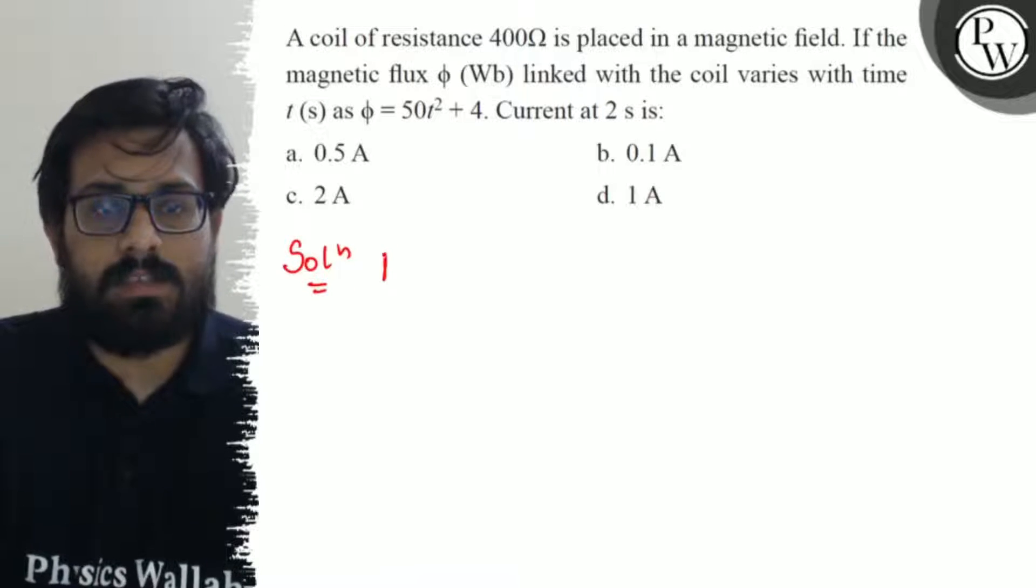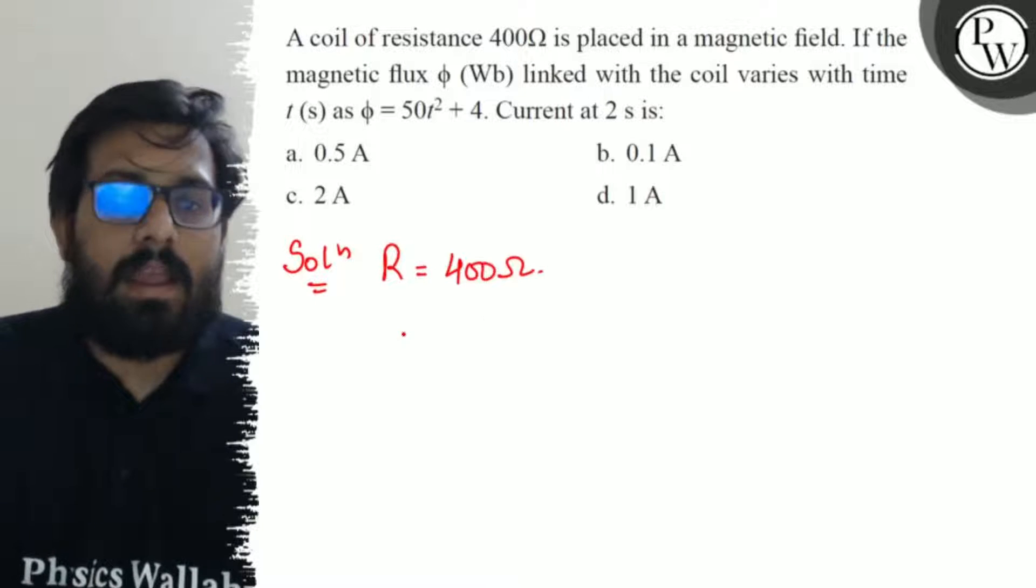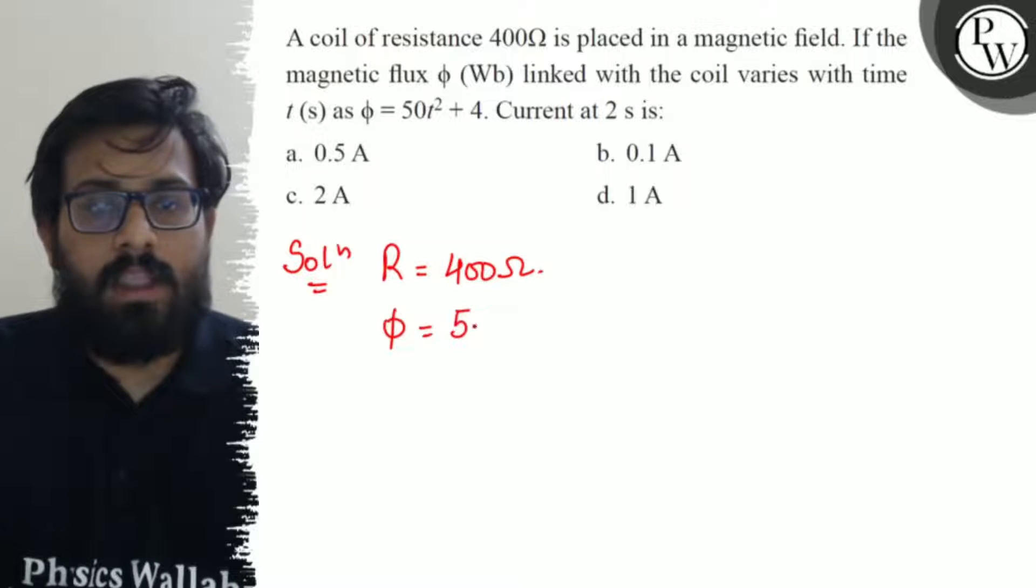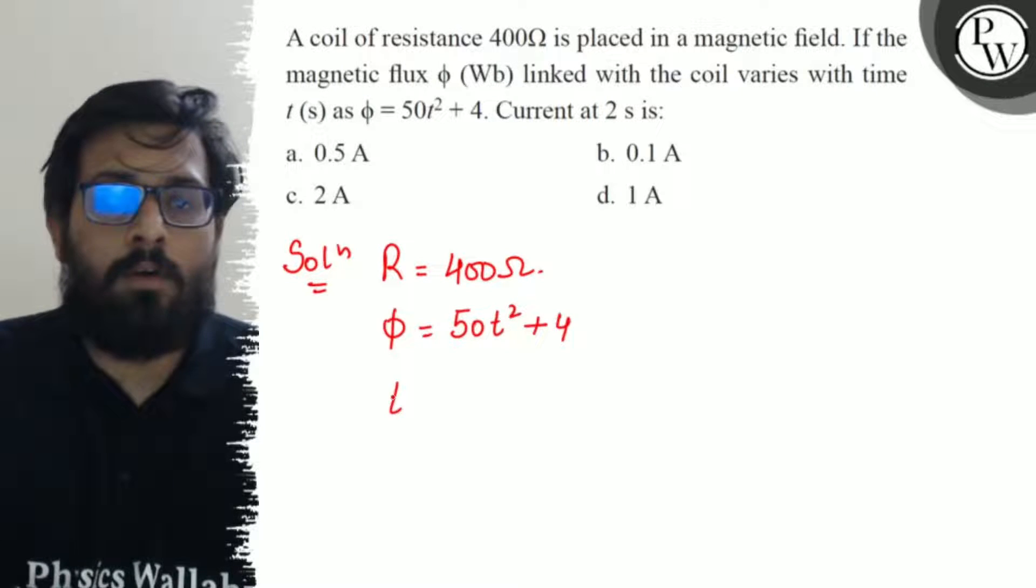What are the given data? Resistance is given as 400 ohm, the flux is given as 50t² + 4, and the time is 2 seconds.